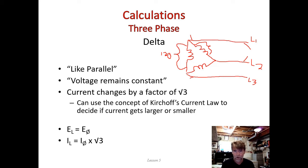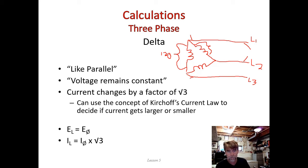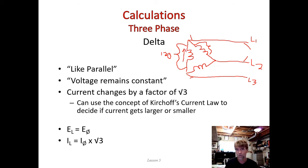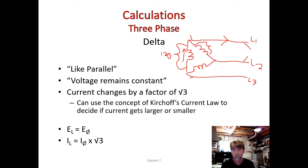Here's where things get different — this is why we say it's *like* a parallel circuit but it's definitely not a parallel circuit. Now let's talk about what happens with current. The current changes by a factor of root 3. If things stay the same they stay the same, but if they change, they change by root 3. We can ask: what is the current flowing through the coil — that's our phase current. The next question is: what's our line current?